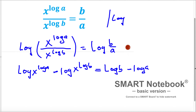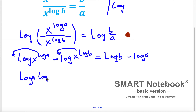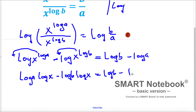According to the exponent properties of logs, the exponents come to the front. So we can write log a times log x minus log b times log x, and everything is equal to log b minus log a.